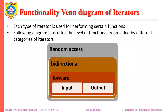When you talk about the functionality vane diagram of the iterators, it is observed here. Each type of iterator is used for performing certain functions. This vane diagram illustrates the level of functionality provided by different categories of iterators. We have input-output iterators, forward iterators, bidirectional iterators, and random access iterators.